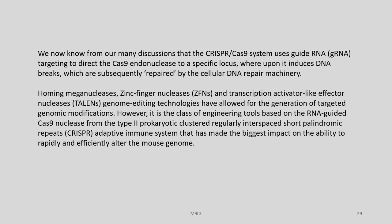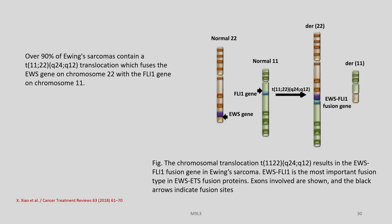The CRISPR-Cas9 system uses guide RNA targeting to direct the Cas9 endonuclease to a specific locus, whereupon it induces DNA breaks which are subsequently repaired by the cellular DNA repair machinery. Homing meganucleases, ZFNs, and TALENs genome editing technologies have allowed for the generation of targeted genomic modifications. However, it is the RNA-guided Cas9 nuclease from the type 2 prokaryotic CRISPR adaptive immune system that has made the biggest impact on the ability to rapidly and efficiently alter the mouse genome.